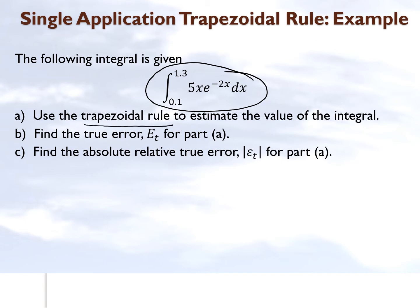We are asked to use the single application trapezoidal rule, find the true error, and find the absolute relative true error. Let's see how we can go about doing that.